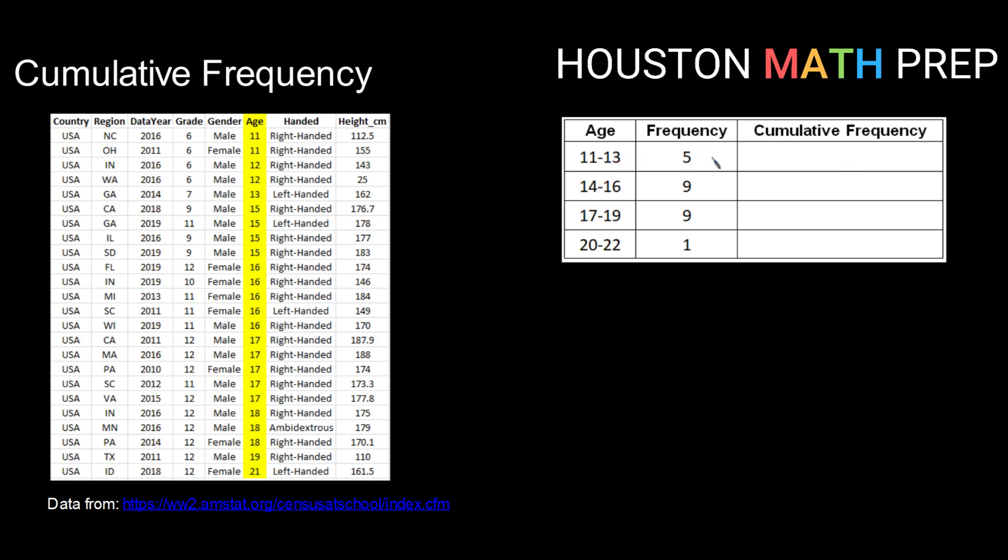So let's look at this age data and come up with our cumulative frequencies. For the class 11 to 13, we are asking how many of our data values from our sample fall between 11 and 13. Well in this case that's going to be the same as our frequency. You can count it up: one, two, three, four, five of our data values.